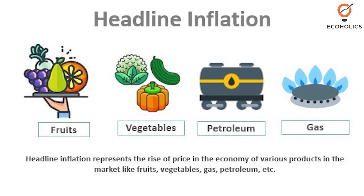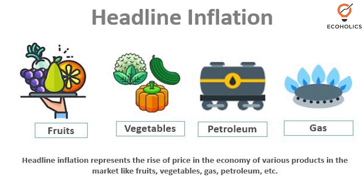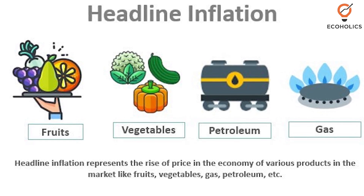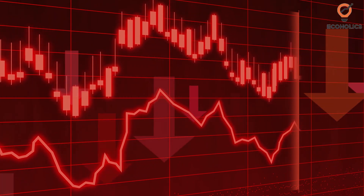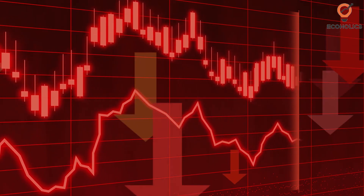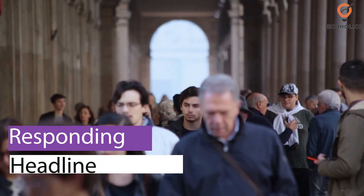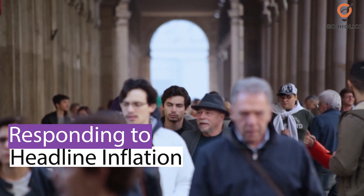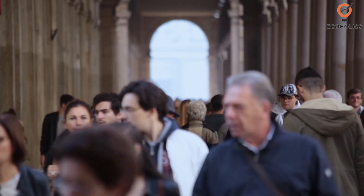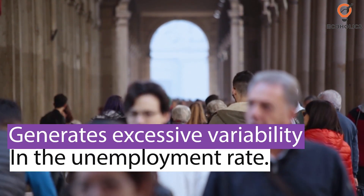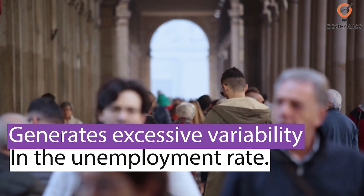On the contrary, headline inflation also takes into account changes in the price of food and energy. Since food and energy prices are highly volatile, headline inflation may not give an accurate picture of how an economy is behaving. Responding to headline inflation might therefore sometimes be inappropriate as it generates excessive variability in the unemployment rate.